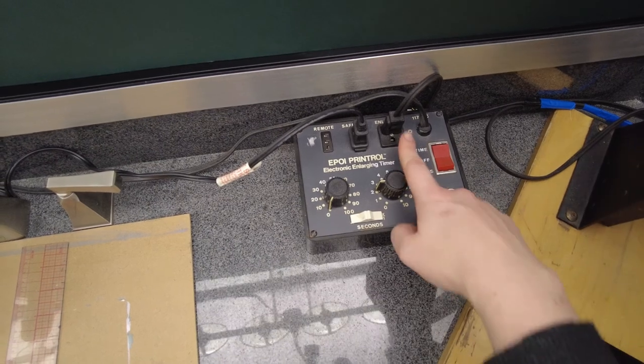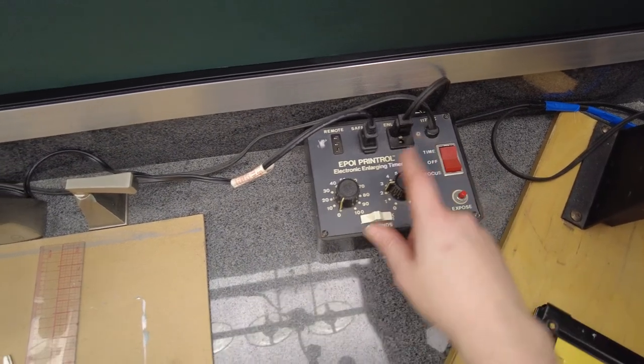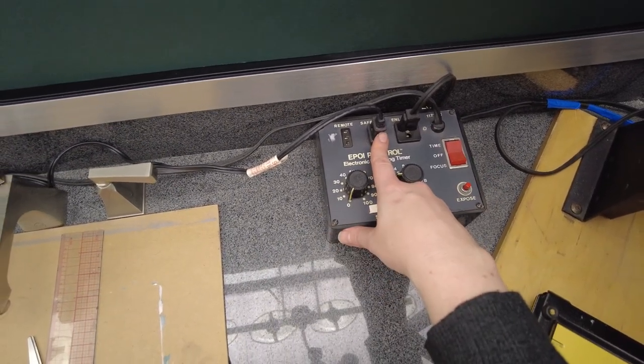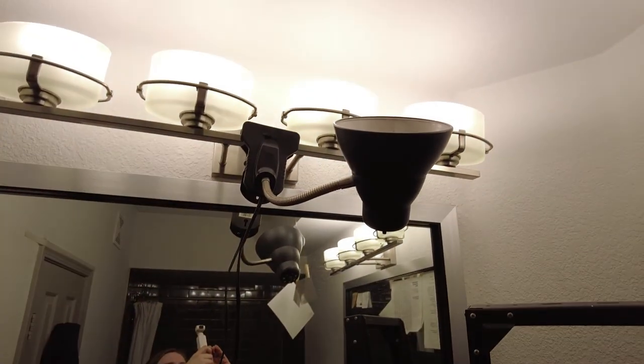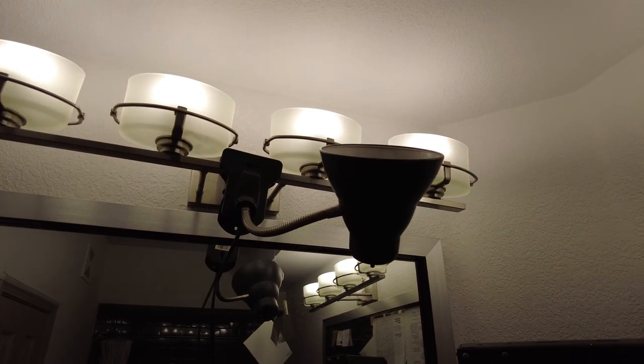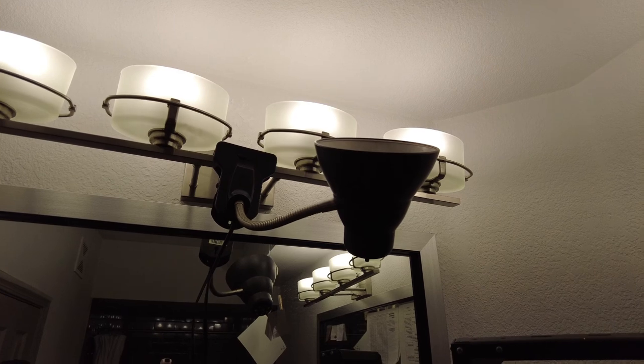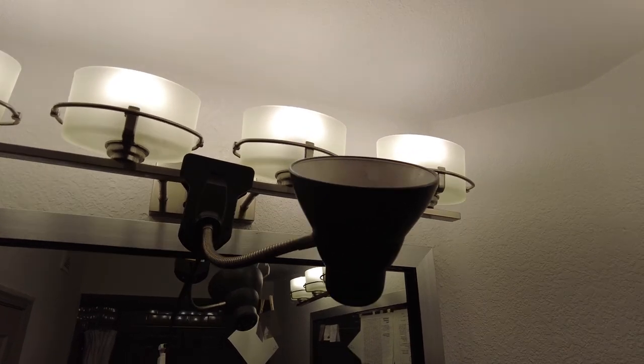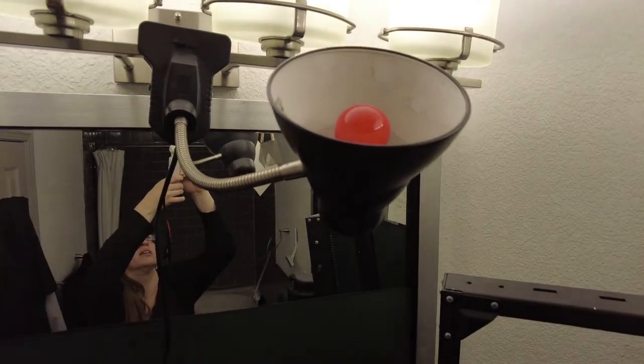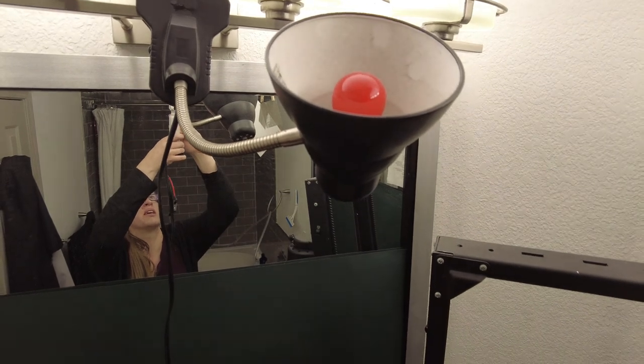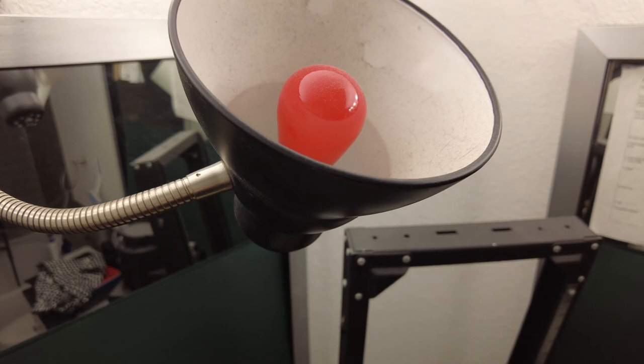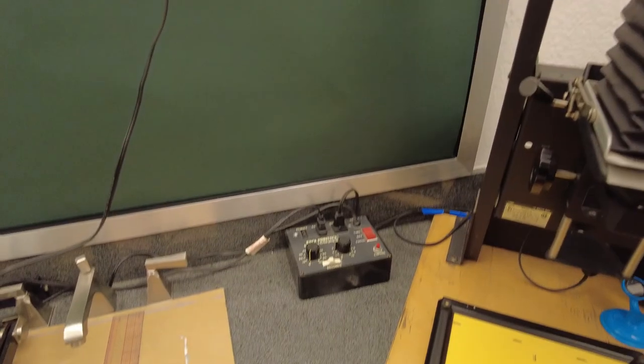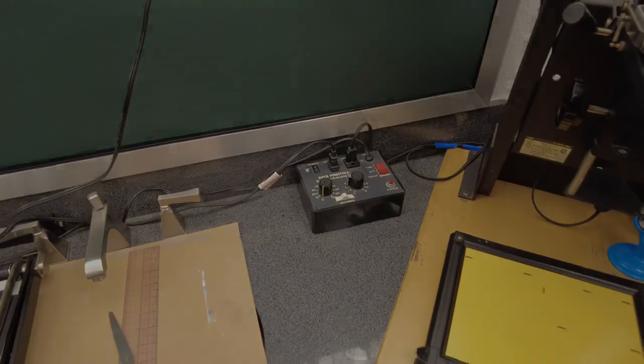My enlarger connects over here and then over here is the plug for my safe light. For my safe light I have a nice cheap option as well. So this is just an old lamp that I had around and what I have inside is a safe light bulb. This safe light bulb only costs four or five dollars from Freestyle Photo.